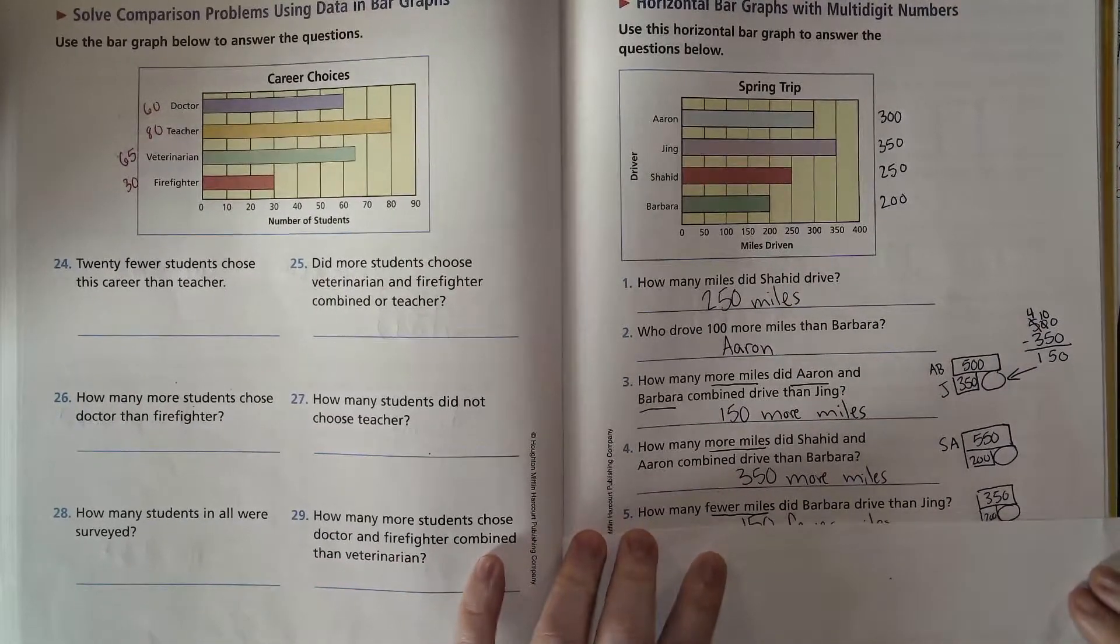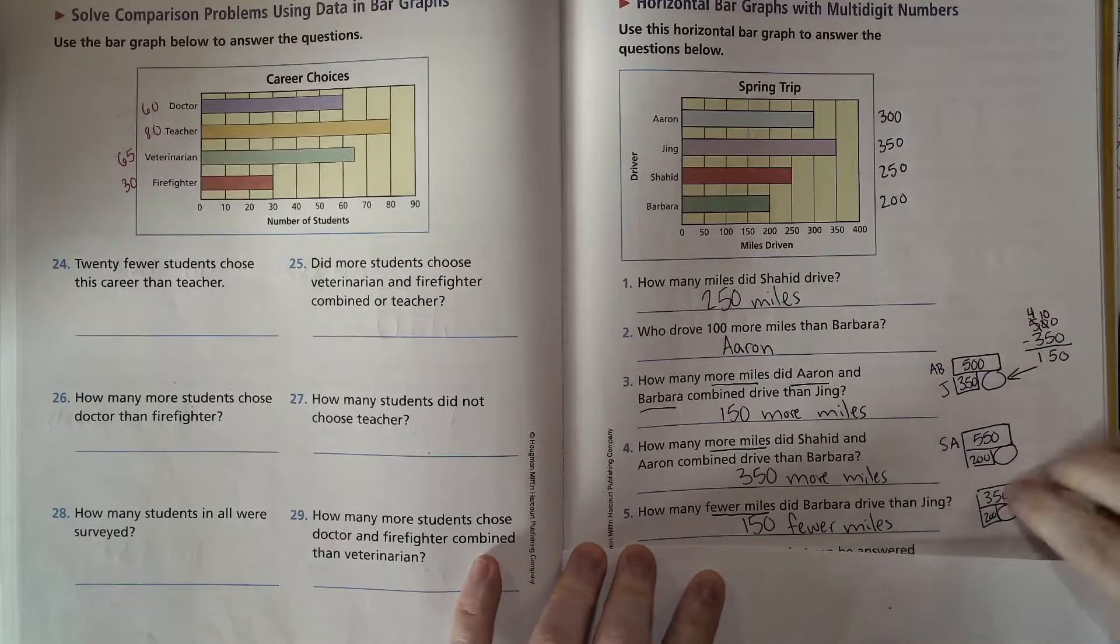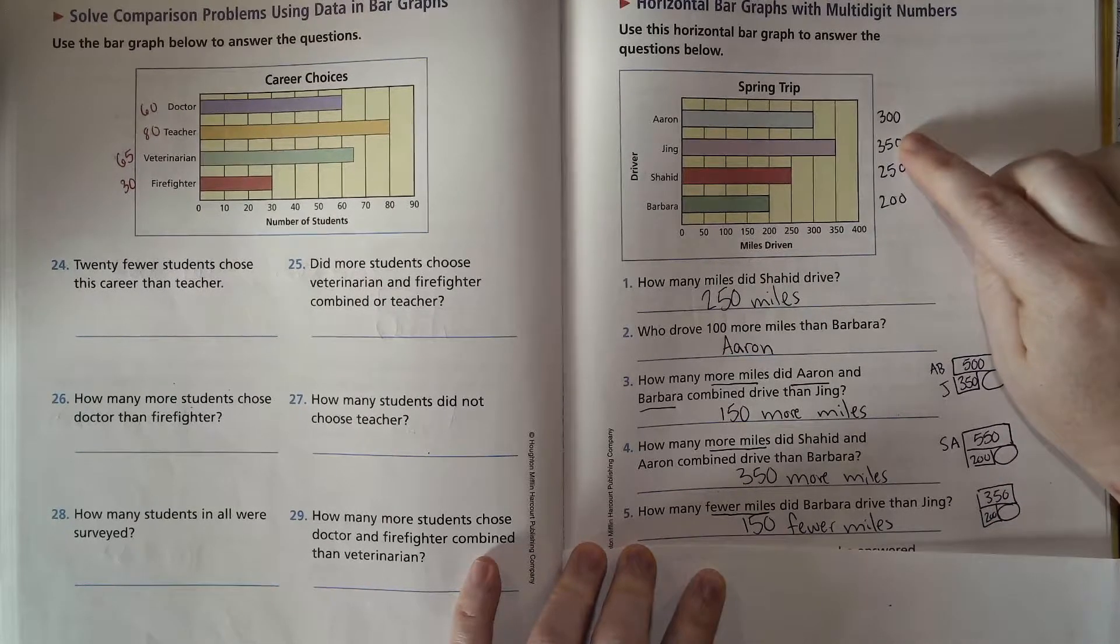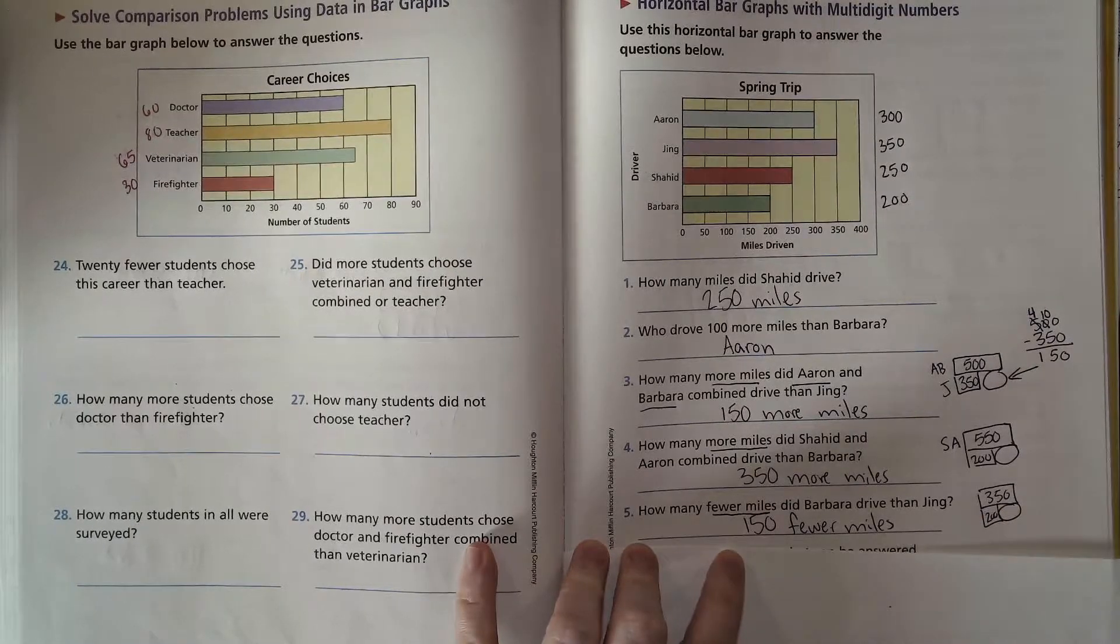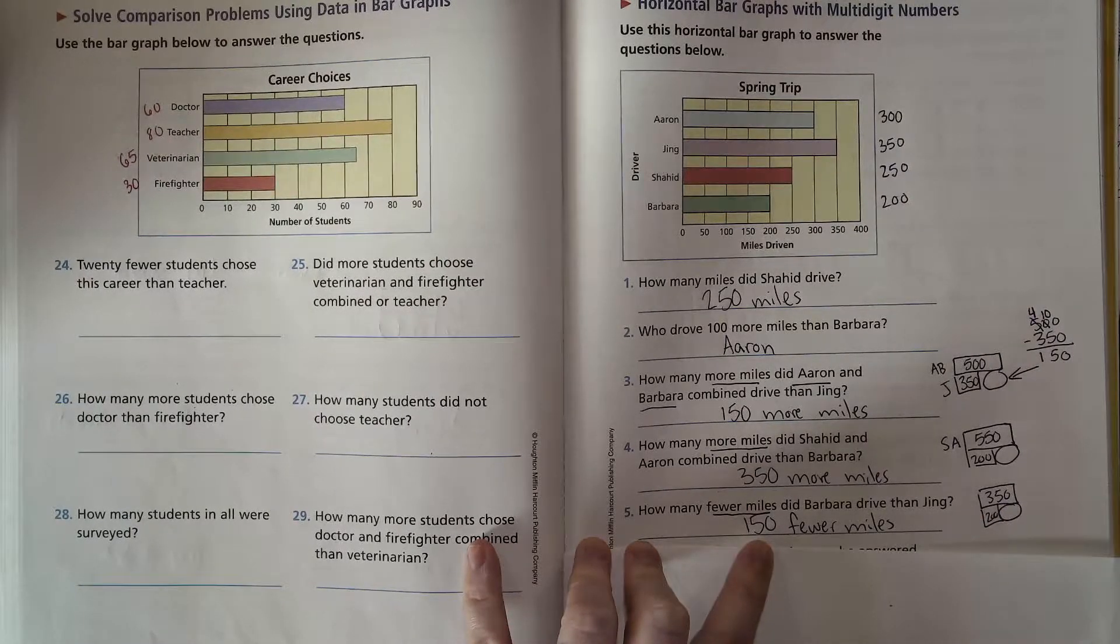Next one here: how many fewer miles did Barbara drive than Jing? So we make a comparison bar. Jing gets the big bar with 350, Barbara gets the little one with 200, and that difference, you can probably do that one in your head, is 150 fewer miles.